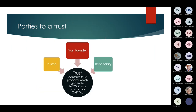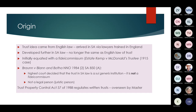The parties to a trust are three: a trustee, a trust founder, and a beneficiary. The trust itself contains the property which generates income or is paid out as capital.